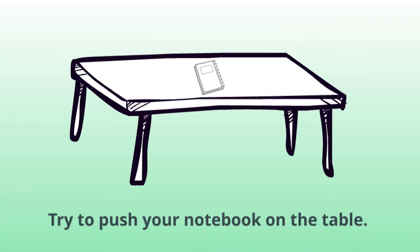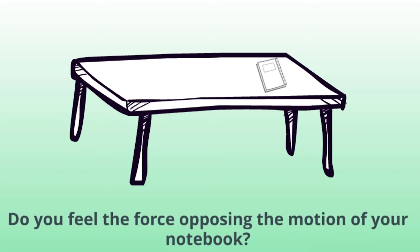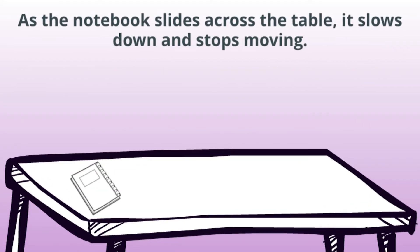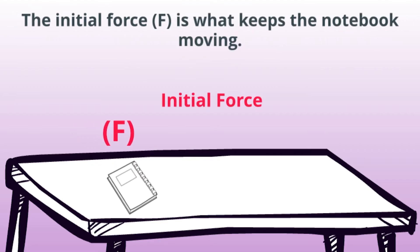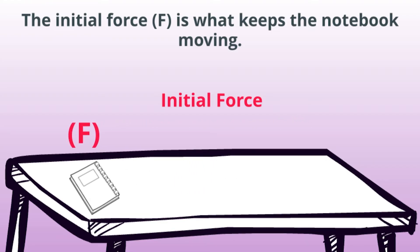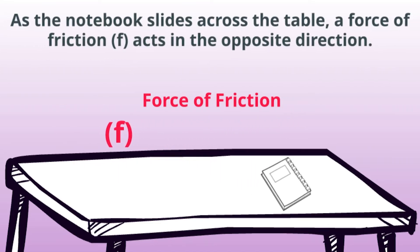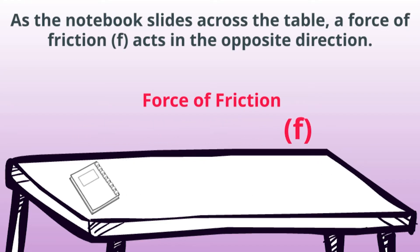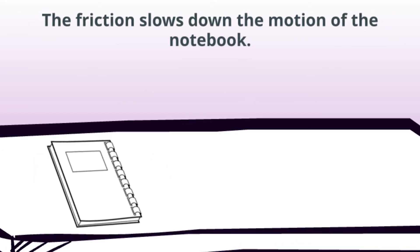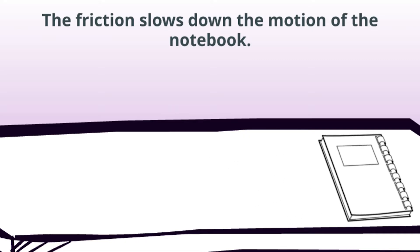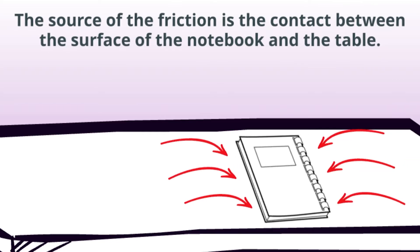Try to push your notebook on the table. Do you feel the force opposing the motion of your notebook? What do you think causes friction between two surfaces that are in contact? As the notebook slides across the table, it slows down and stops moving. The initial force is what keeps the notebook moving. As the notebook slides across the table, a force of friction acts in the opposite direction, slowing down the motion of the notebook.